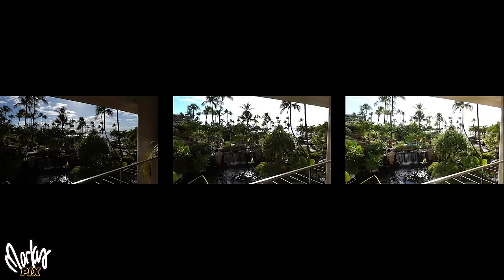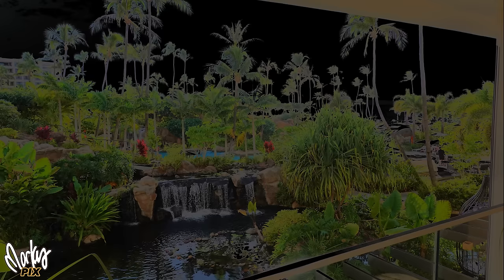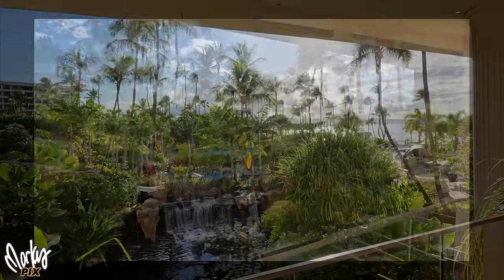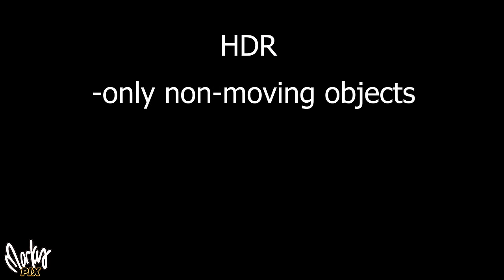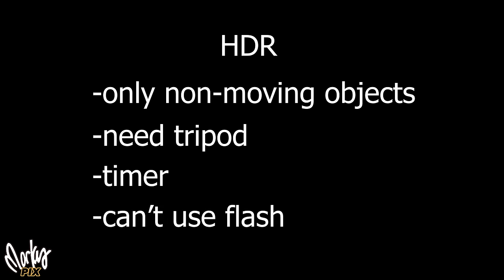HDR takes three pictures really fast. The first is underexposed, the second properly exposed, and the third overexposed. It uses the lighter image to brighten shadow areas and the darker image to tame blown-out areas like the sky, then stitches all three together — and the results can be quite amazing. But you can only shoot non-moving objects, because blending three frames causes blur with any movement. You cannot photograph people, animals, or even landscapes with moving trees. You'd need a tripod and a timer, since even pressing the shutter causes blur. HDR is quite impractical, and you can't use flash with it either.